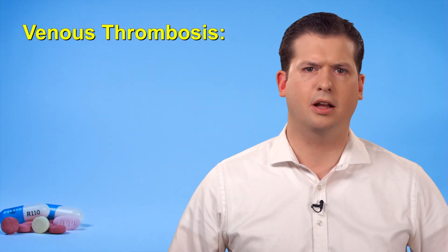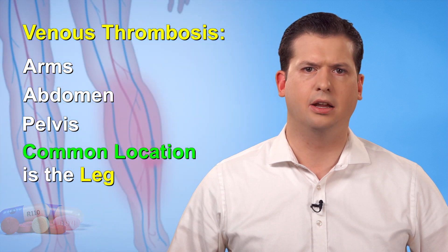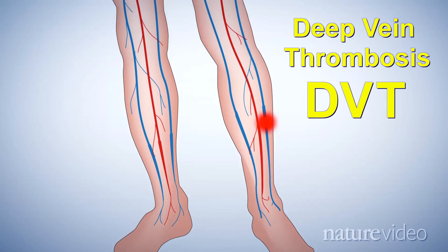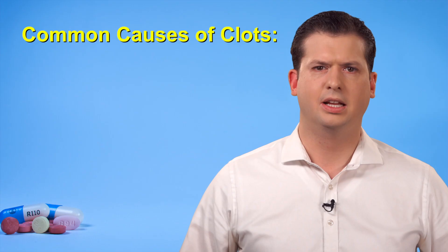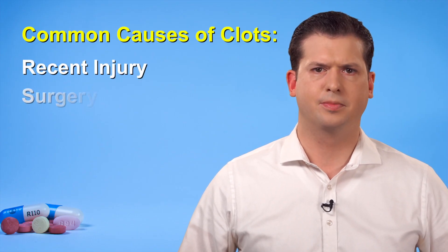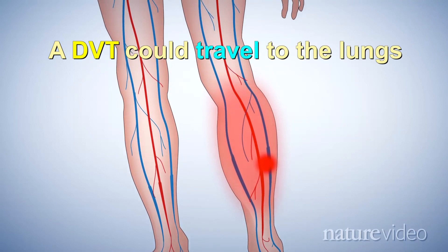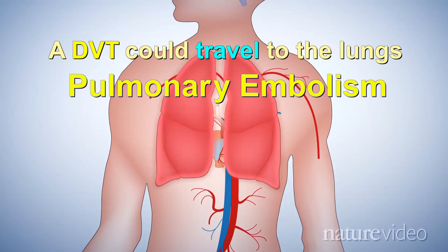Venous thrombosis is a condition where a blood clot forms in a vein — in the arms, abdomen, or pelvis. The most common type occurs in the leg or thigh veins, called deep vein thrombosis or DVT. The leg may swell, feel painful, appear warm, or become reddened, though not all leg clots result in symptoms. Causes include recent injury, surgery, long flights, or prolonged bed rest. A further danger is that part of the clot could dislodge and travel to the lungs, causing a pulmonary embolism, leaving you short of breath or causing sharp chest pain when breathing.